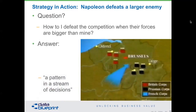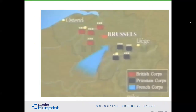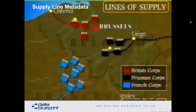Third example of strategy: Napoleon at Waterloo. He's facing two armies — the army in red is the British, the army in black is the Prussians — and they're bigger in combination than Napoleon's French Corps. The question: how do you defeat the competition when the forces are bigger than mine? The answer is divide and conquer. This strategy is still taught in military history books today because it is a brilliant strategy. It didn't work — but that's a different issue.